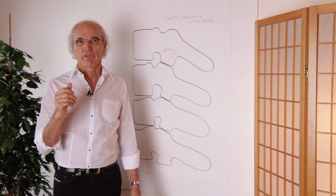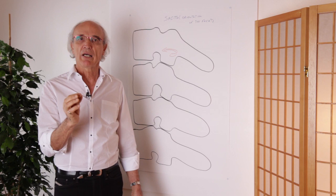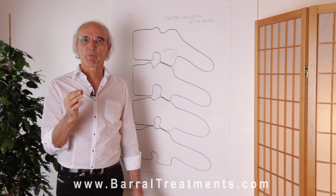The disc, the ligamentous system, venous system, arterial system, muscular system — all of these are affected. So we will try to do something very precise on the disc, on the foramen, and on the venous system, in order to permit these people to have a better life.